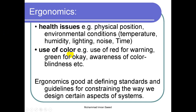Ergonomics also tells us about color conventions: red is for warnings and errors, and green is for success or confirmation. Whenever we show errors or warnings, they should be in red; when something is done successfully, it should be shown in green. Additionally, ergonomics tells us to be aware of color blindness — we must not use colors that create problems for users who cannot differentiate between certain colors.